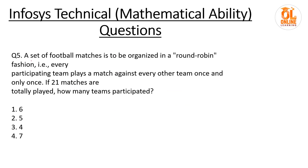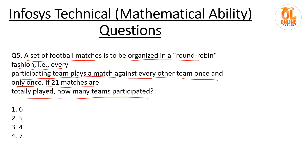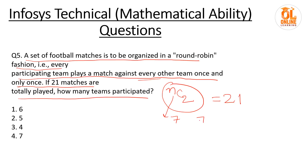Next question: a set of football matches is organized in a round-robin fashion — every team plays against every other team exactly once. If 21 matches are played in total, how many teams participated? The total number of matches is nC2. Set nC2 = 21. If n=7, then 7C2 = 7!/(2!×5!) = 21. So 7 teams participated.